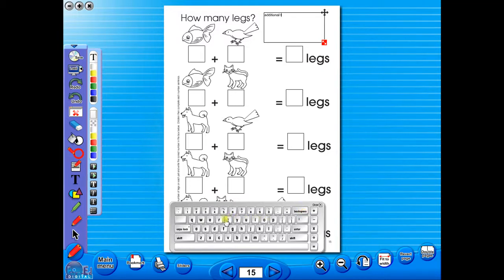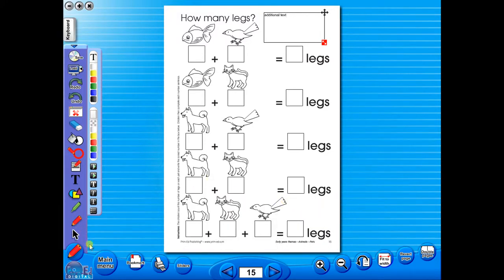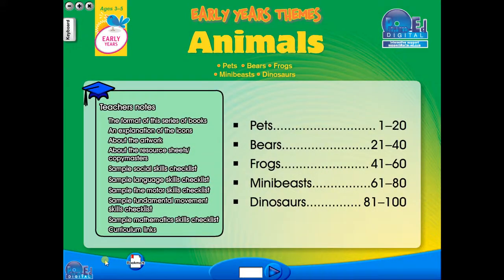Some of the advantages of eBooks are: they reduce the need for photocopying, as many activities can be utilized from the whiteboard. It is easier and faster to print worksheets, as the eBook is linked to the school copier. No more standing at the photocopier trying to get the best copy of a worksheet.